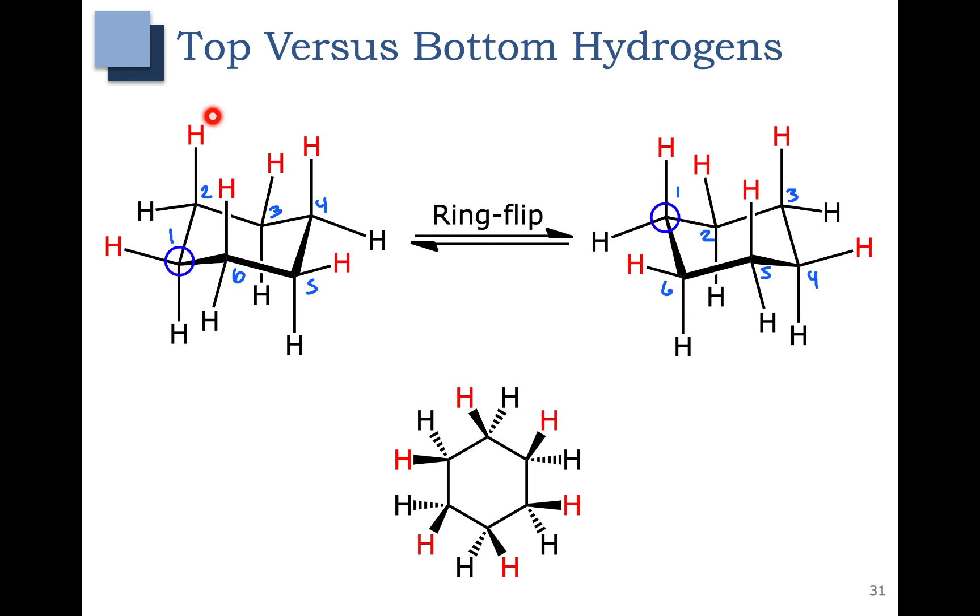Carbon 2 has a hydrogen that's up in axial. Carbon 2 over here has a hydrogen that's up in equatorial. It's also important to note that you can also draw a ring flip like this.